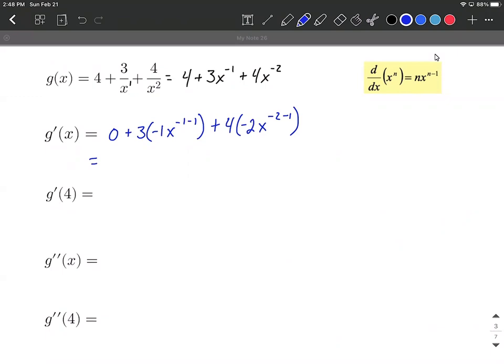Next up, let's clean this up a little bit. So we have three times negative one. And I'm dropping the zero because adding the zero doesn't add to our derivative. So three times negative one makes negative three. X to the negative one minus one makes negative two. Four times negative two makes negative eight. Eight x to the negative two minus one more makes negative three.